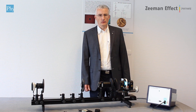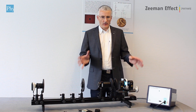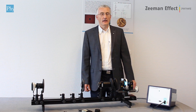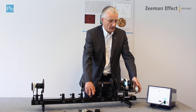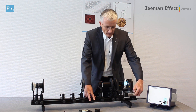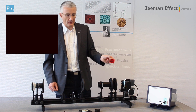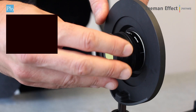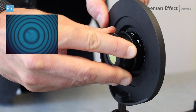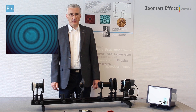So far I have shown you the normal Ziemann effect. Now we simply change a little bit to realize the anomalous Ziemann effect. We rearrange the magnet and replace the red filter with a blue filter. And now you can see up to nine spectral lines.